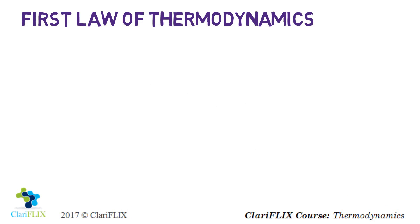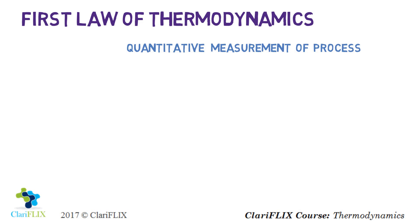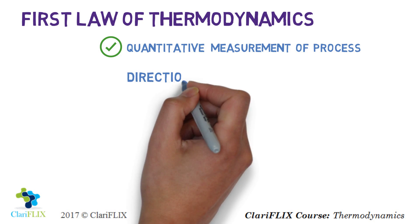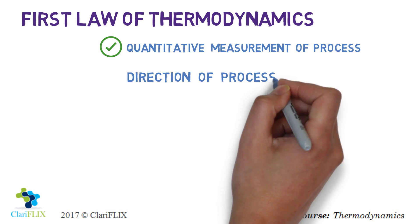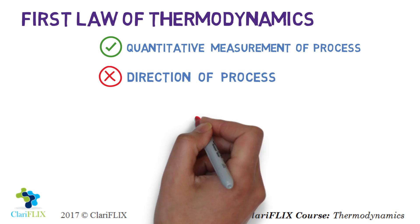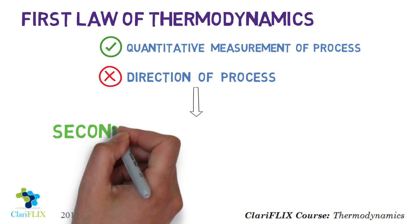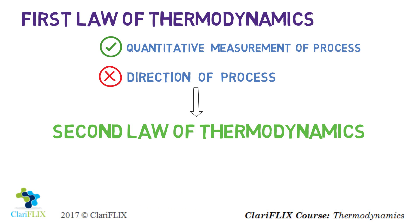The first law of thermodynamics gives you the quantitative measurement or magnitude of energy transfer, but it does not say anything about the direction in which a process will occur. Due to this limitation of the first law, the second law came into the picture, which provides information about the direction of natural processes.